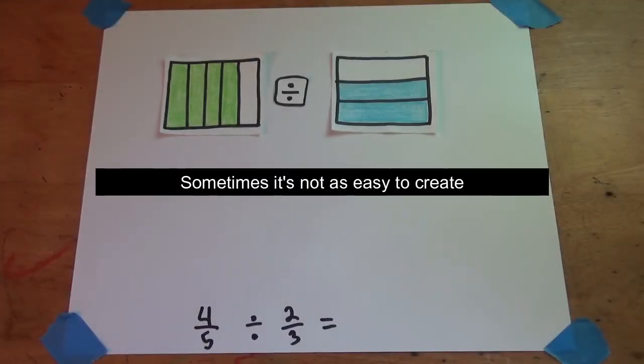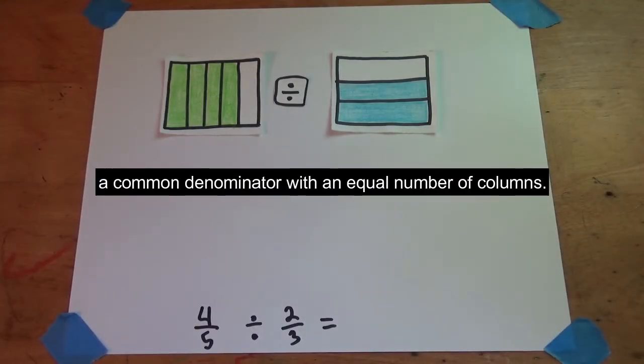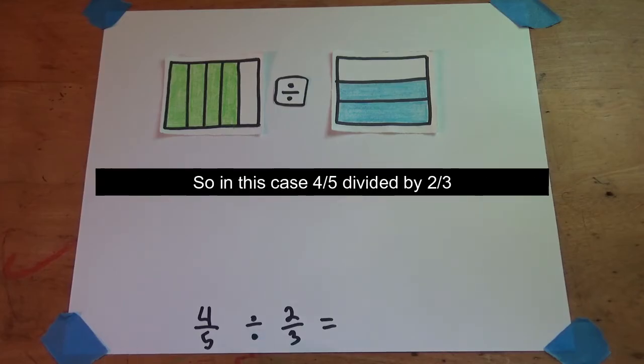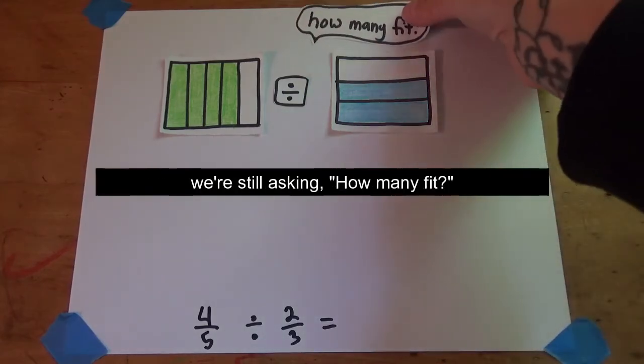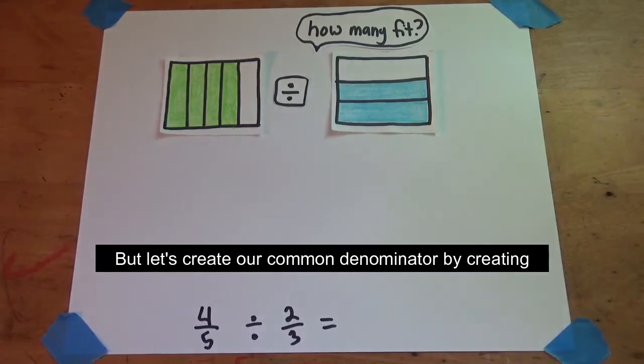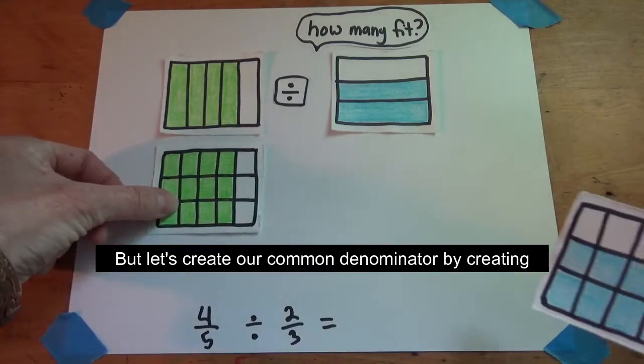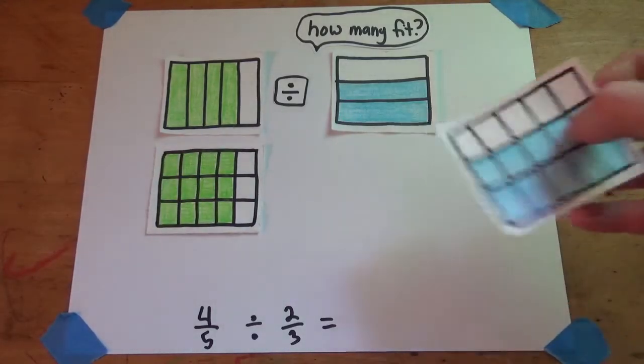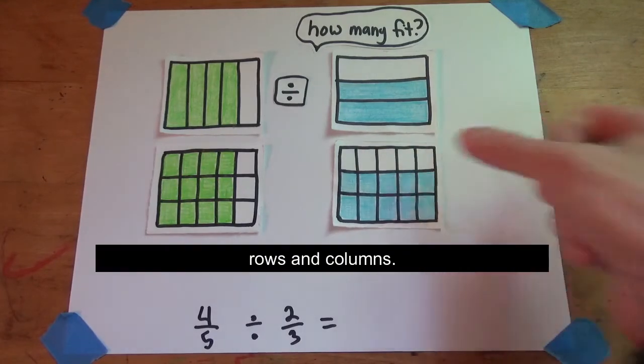Sometimes it's not as easy to create a common denominator with an equal number of columns, so in this case, four-fifths divided by two-thirds, we're still asking how many fit, but let's create our common denominator by creating rows and columns.